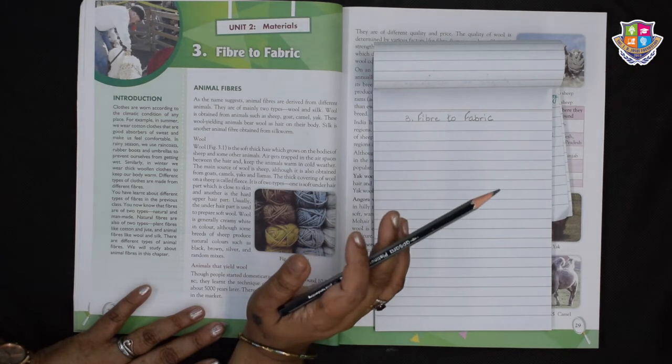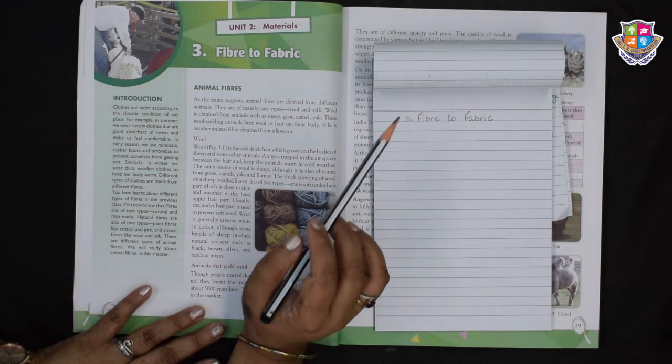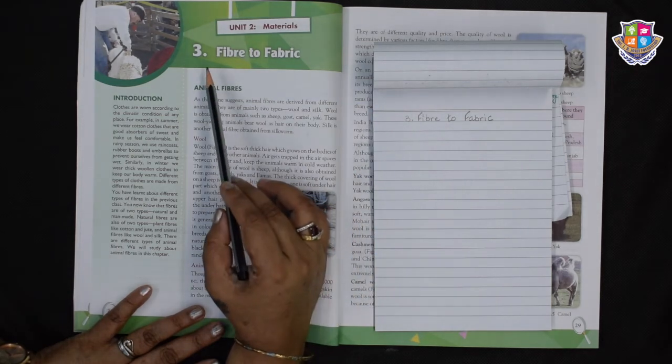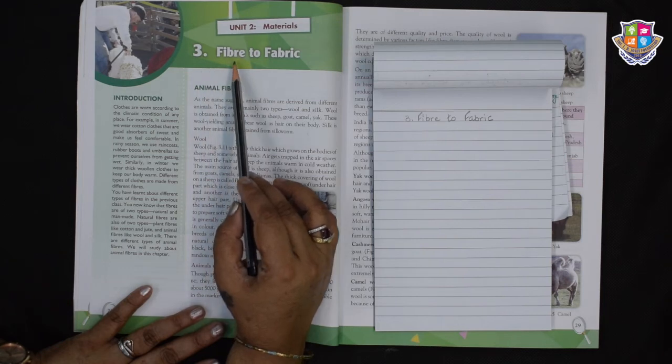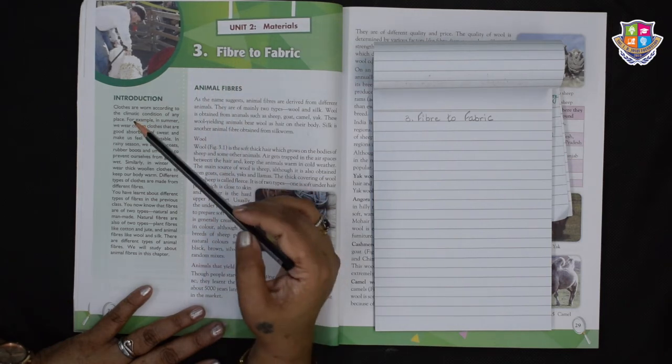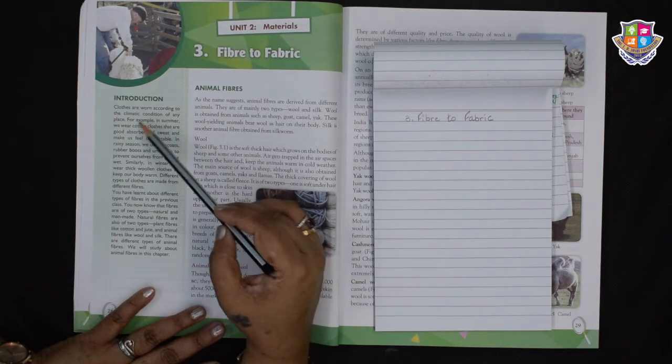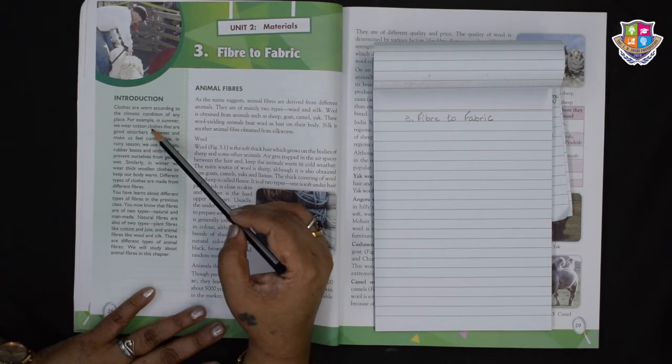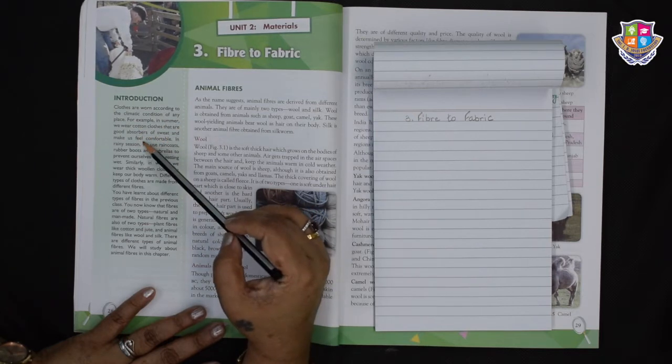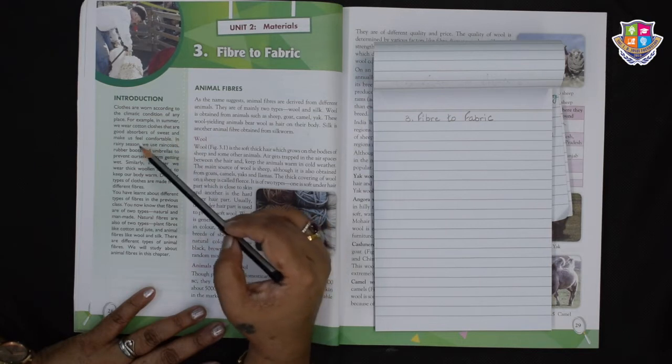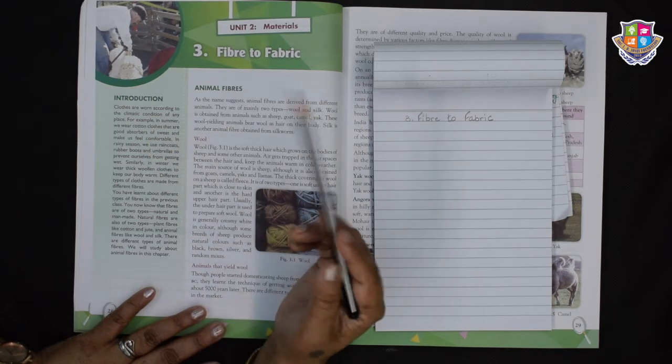Well, a pleasant day children. I am sure you must be very eager to learn the new lesson for the day which is fibre to fabric. Now let's begin with the introduction. Clothes are worn according to the climatic condition of any place. For example, in summer we wear cotton clothes that are good absorbers of sweat and make us feel comfortable.